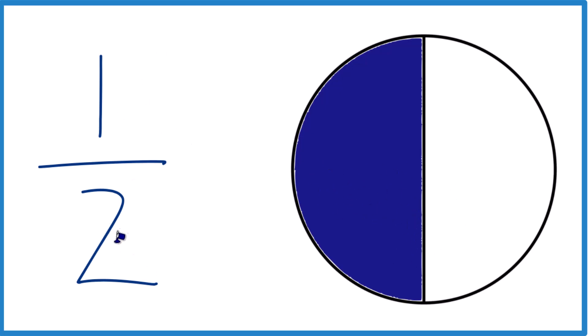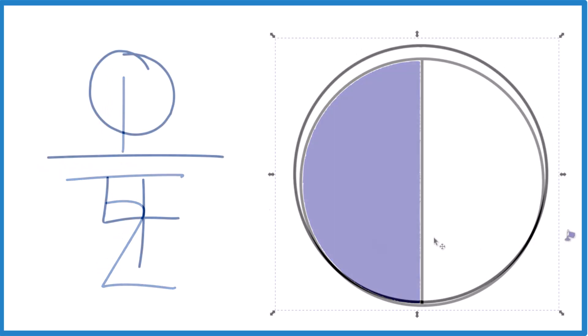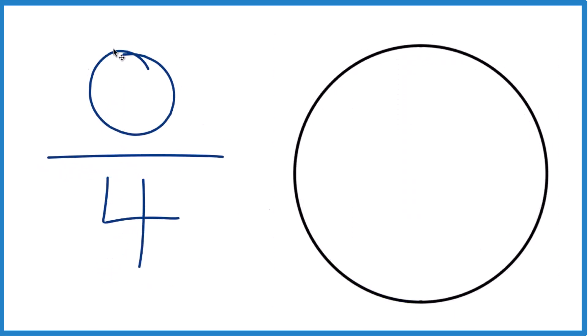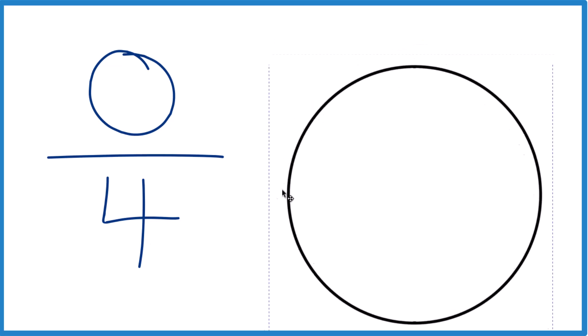But let's go back to 0 over 4. What does that mean? We're saying we have 0 things we're going to divide in 4 pieces. So we don't even have this. We have nothing. 0.